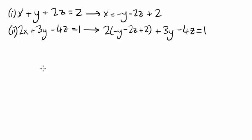We could rearrange this second equation to get y all in terms of z. And so you can see that again, there are an infinite number of solutions. This is known as an underdetermined system.